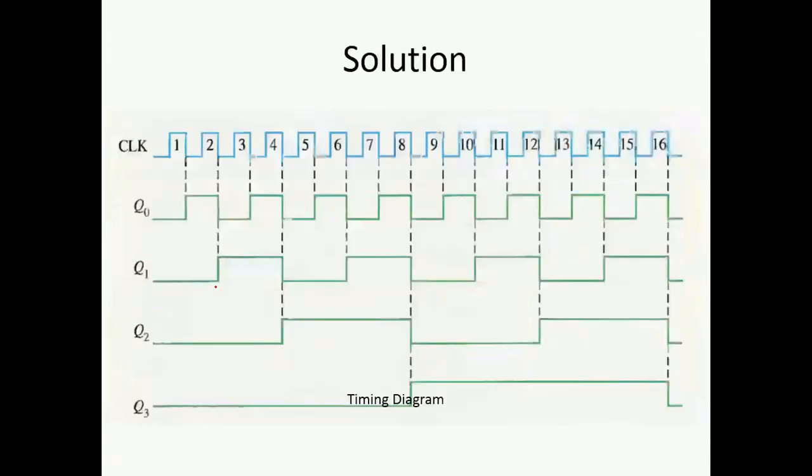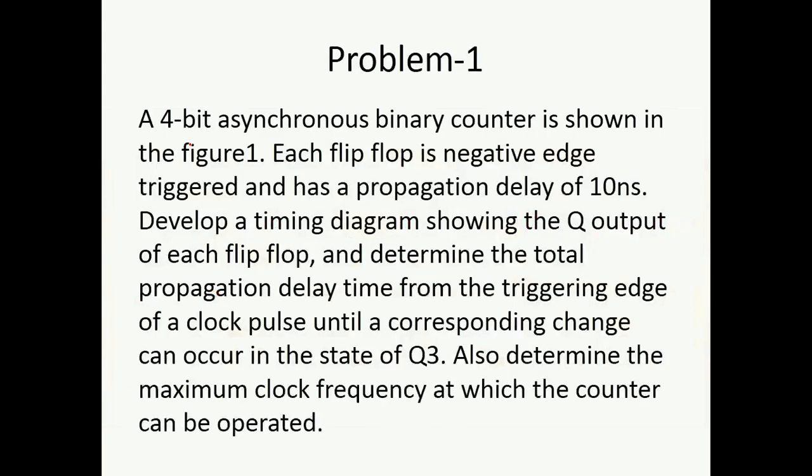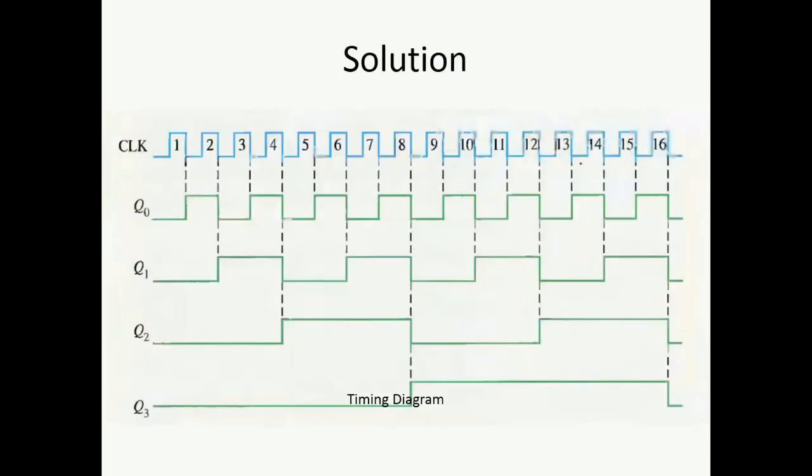This is the timing diagram. As you can see, the negative edge triggered means the outputs are going to change for every negative edge triggering. This is our positive edge going from 0 to 1, whereas this is our negative edge going from 1 to 0. Every time a negative edge is appearing in our clock signal, there is a change in the state of output.